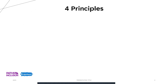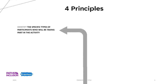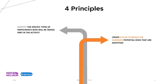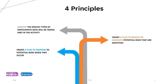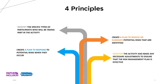The first principle is when we start to set up an activity, we have to identify the specific needs and participants who will take part. The second is to create a plan to reduce and eliminate potential risks. Third, we also have to plan how we will respond — what will we do when something happens? And fourth, we should monitor and look back to see what went wrong or what can we change.